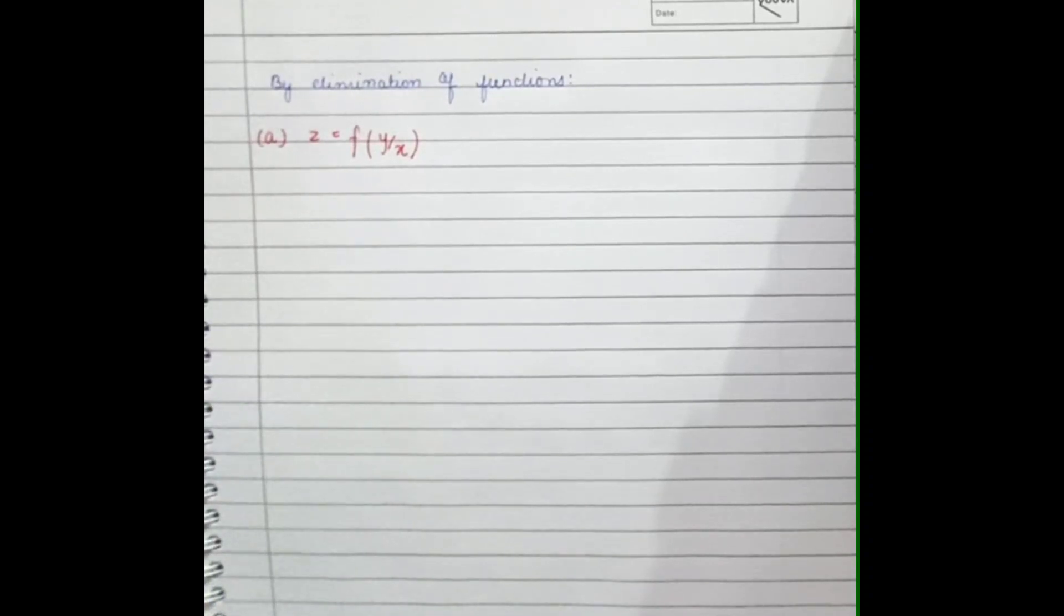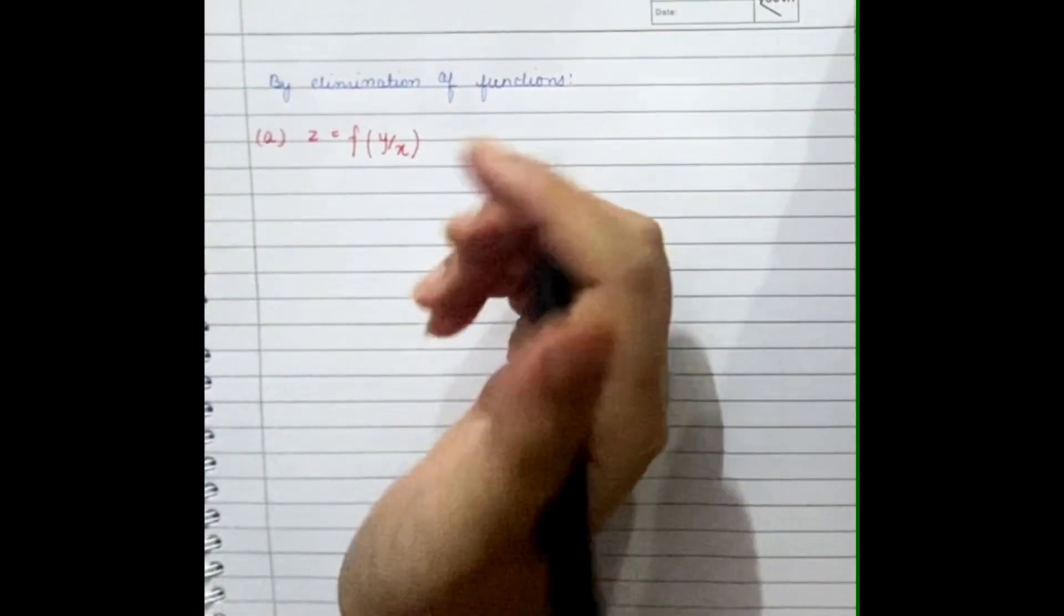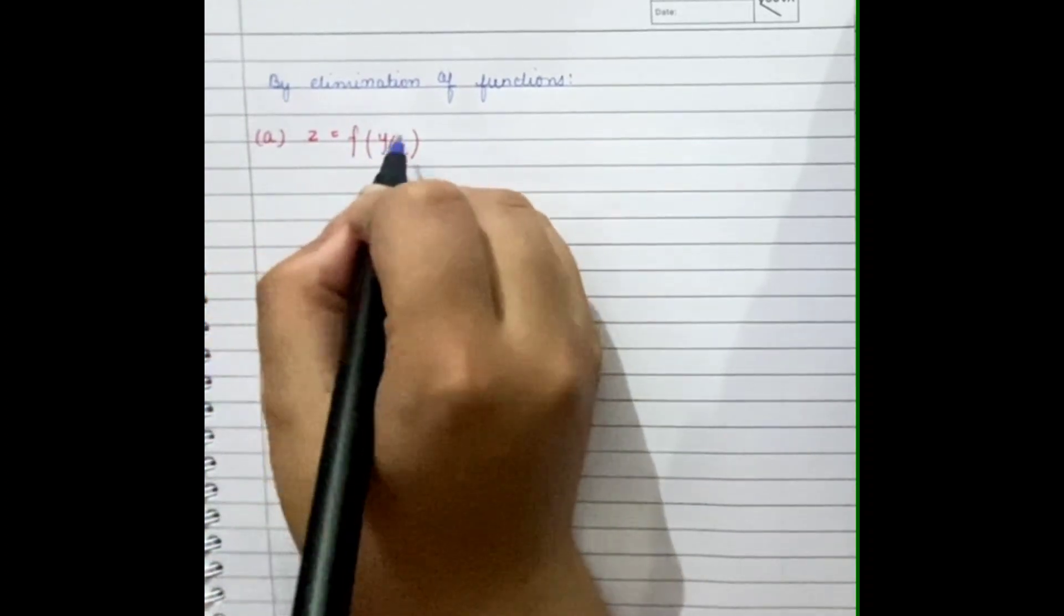Welcome or welcome back to our video guys. So today we are going to learn how to form a PDE by elimination of arbitrary functions. In the previous video we learned about how to form PDEs by elimination of constants. So now let's learn this concept. We'll understand this by taking a question. So that is z equals a function of y by x.